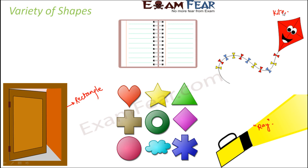Rectangle and kites are all types of quadrilaterals, and we will discuss these shapes one after another. Think of the wall clock — it is in the shape of a circle. Not only the wall clock, but if you think of a bangle, a wheel, or a tire, all of these are in the shape of circles. So circle, rectangle, and line segments are all examples of basic geometrical shapes.